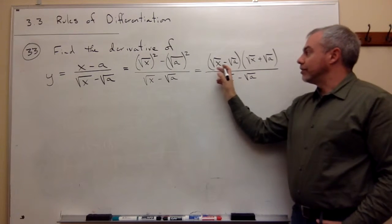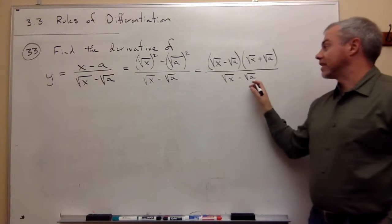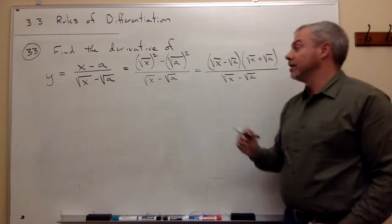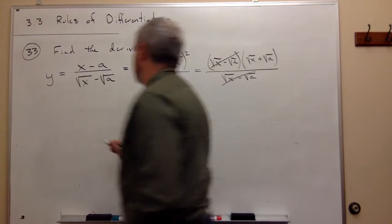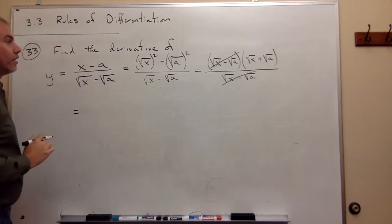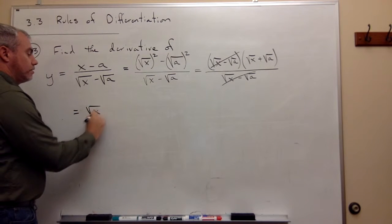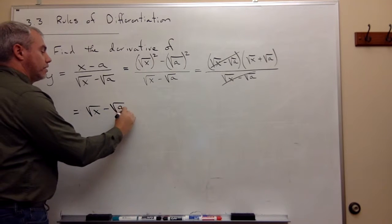Now I have a square root of x minus the square root of a on top. I have a square root of x minus the square root of a on the bottom. Those cancel.